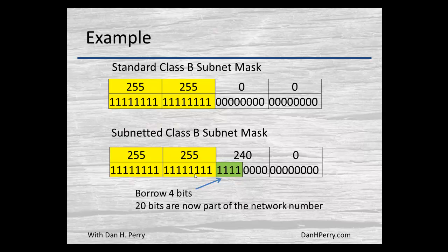The subnet mask in this case would be 255.255.240.0, because 4 ones followed by 4 zeros in an octet gives us a value of 240.